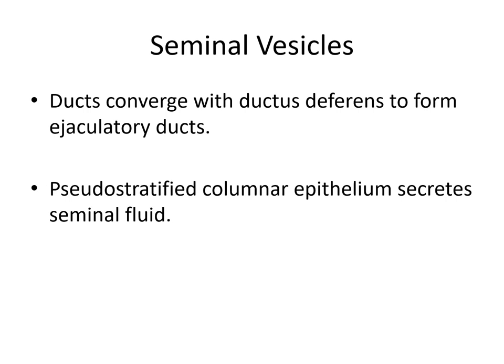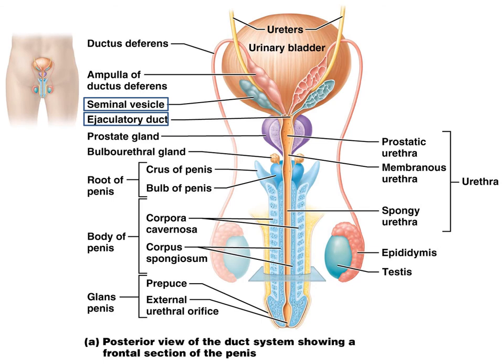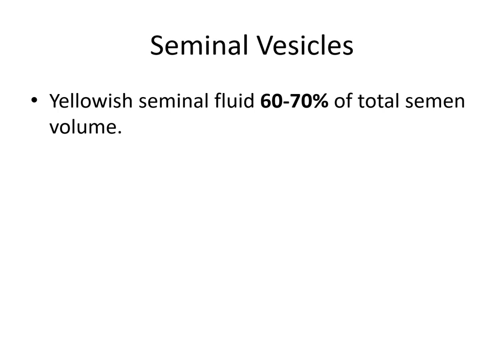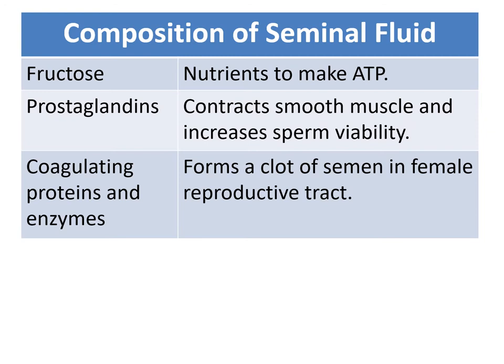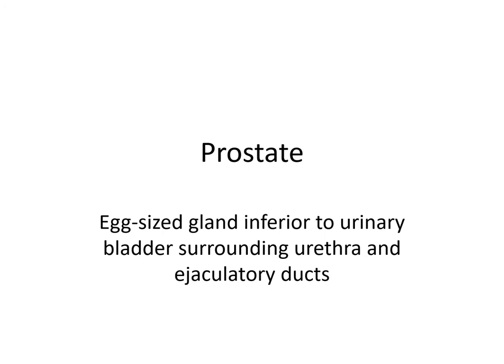The ducts of the seminal vesicles converge with the ductus deferens to form the ejaculatory ducts. Pseudostratified columnar epithelium secretes the seminal fluid. Its secretion is a yellowish seminal fluid and composes the majority of the semen volume — about 60 to 70%. The composition of seminal fluid includes fructose, which is a nutrient to help make ATP; prostaglandins, which contract smooth muscle and increase sperm viability; and coagulating proteins and enzymes, which form a clot of semen in the female reproductive tract so the sperm is not lost.